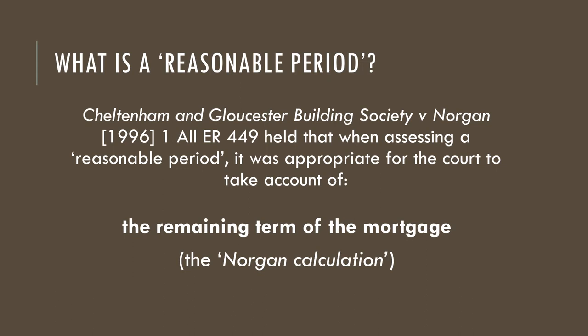Now, if you owe £1,000 in arrears and you have 20 years to repay those, that seems perfectly possible — quite reasonable, and looks quite helpful towards the borrower. That's what the doctrinal account would suggest. We'll challenge that in a moment. So that's what the position is at law for the moment — that's what Section 36 says.